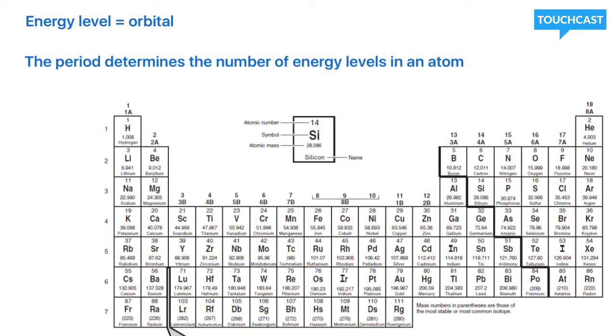Now, on the periodic table, the period number determines the number of energy levels in an atom. For example, everything in period 1 will have one energy level. Everything in period 2 will have two energy levels.